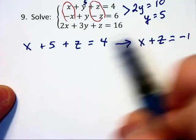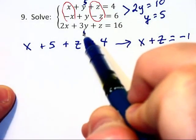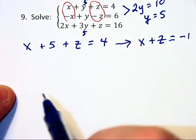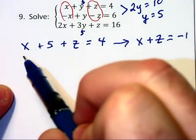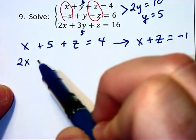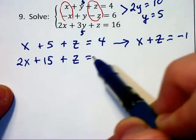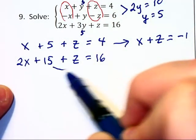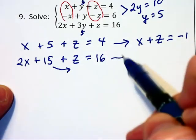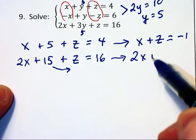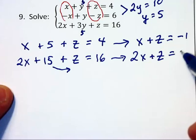and I'm going to do the same thing here, substitute 5 into that bottom equation, that will give us 2x plus 15 plus z is equal to 16, and subtract that 15 to the other side will give us 2x plus z equals 1.